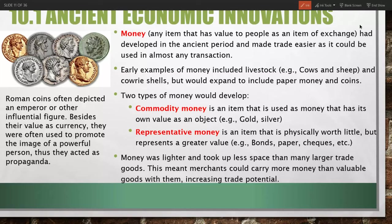Another major economic innovation in the ancient period was money. Before its development, trade was based on a barter system — one good exchanged directly for another, such as weapons or tools exchanged for armor or clothing. A problem with barter is that you could only trade what you had, and if other people didn't want what you offered, you couldn't access what they had. This limited economic transactions and activity.